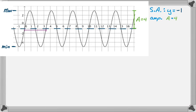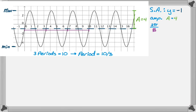I need the period. Starting from the first intercept and following the pattern, I don't land on a nice lattice point after one period. So I count again — and again — and after three periods I end up at 10. So three periods take 10, which means one period is 10 over 3. I use that to solve for b: 2π over b equals 10/3, so b equals 3π over 5. Sometimes you can't count one period cleanly, so you count multiple periods and divide.